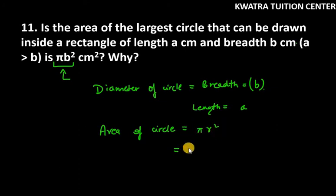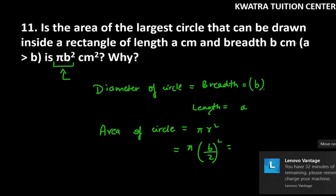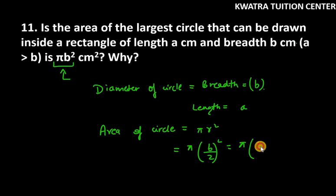We know the area of the circle is π r². What do you put in the area of the circle? b over 2. So b over 2 whole square is π b² over 4.